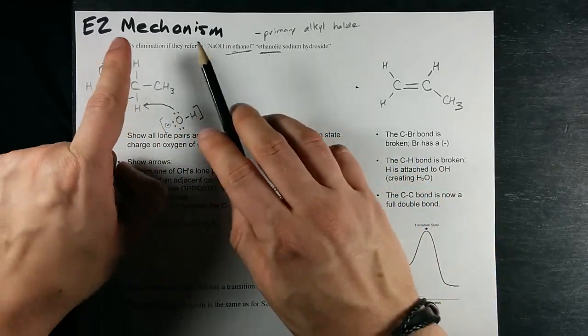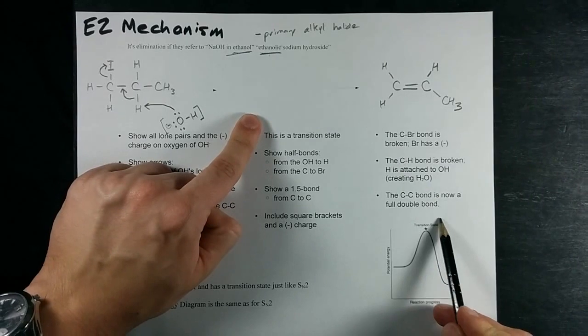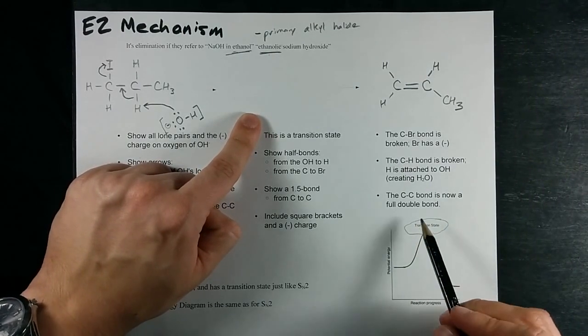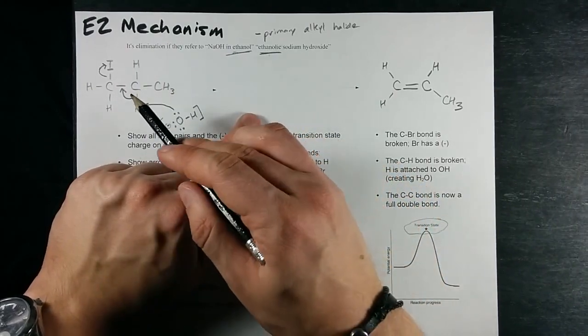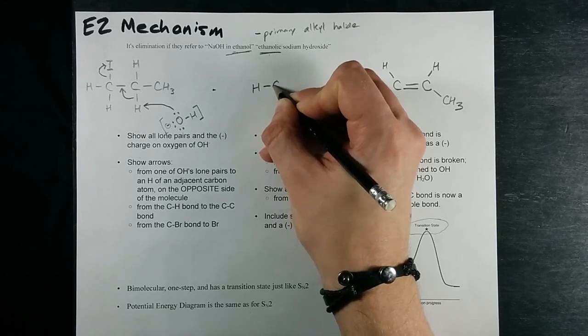But the key to the mechanism is this middle part, which is the transition state. It's the thing at the very top of the potential energy curve. It's the highest energy. It's the halfway point between these two. Now, let me draw this very carefully for you.